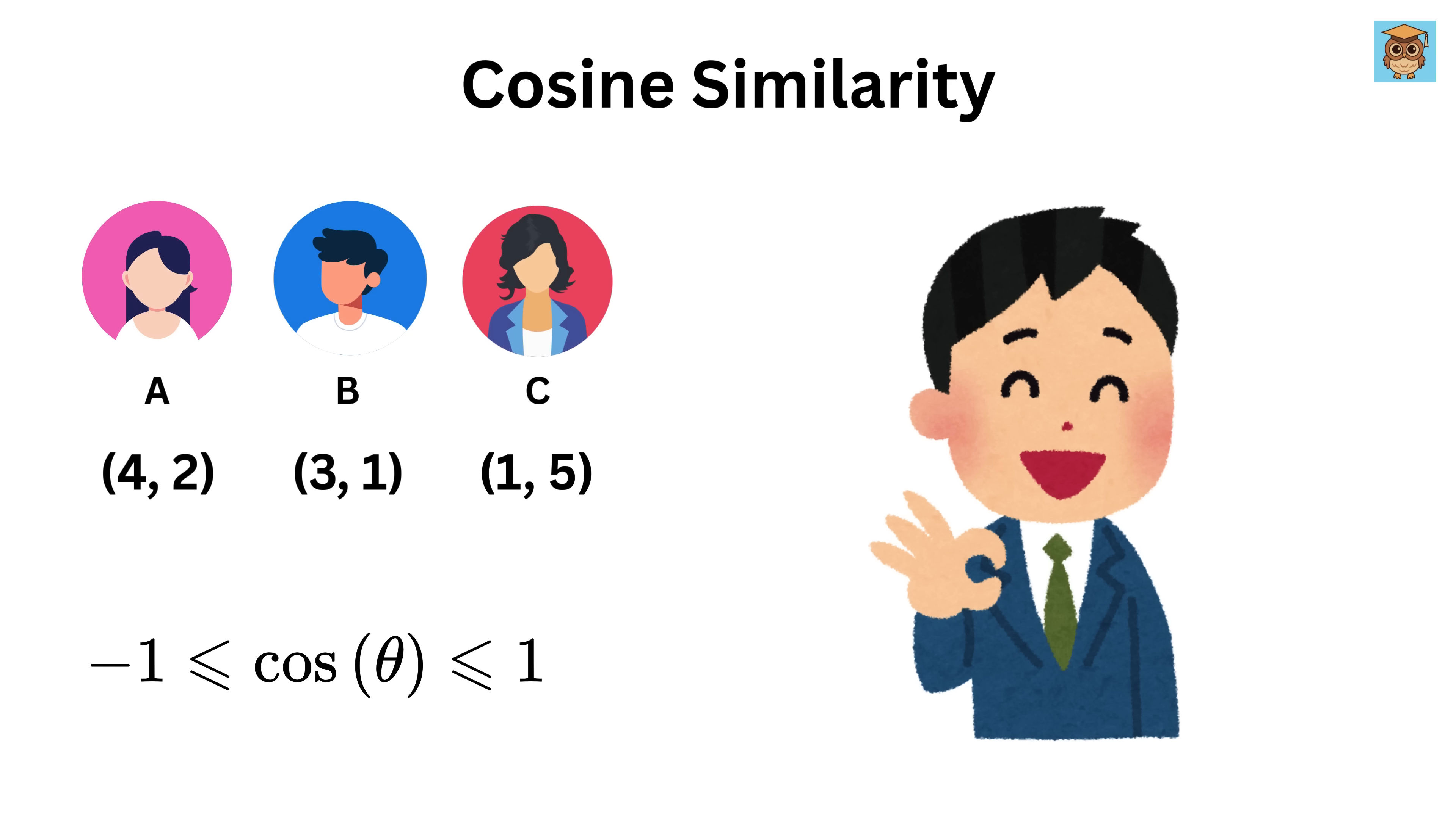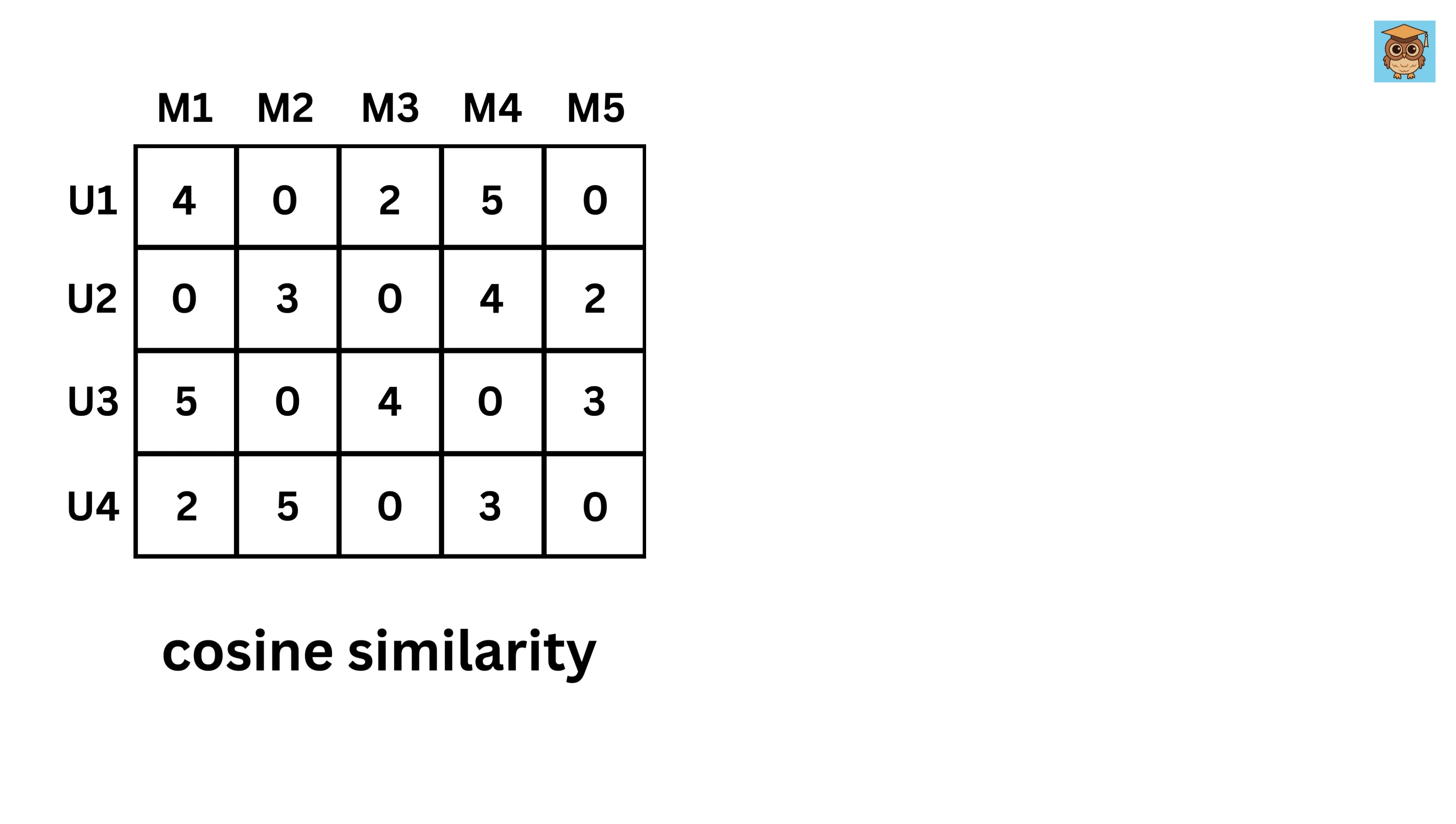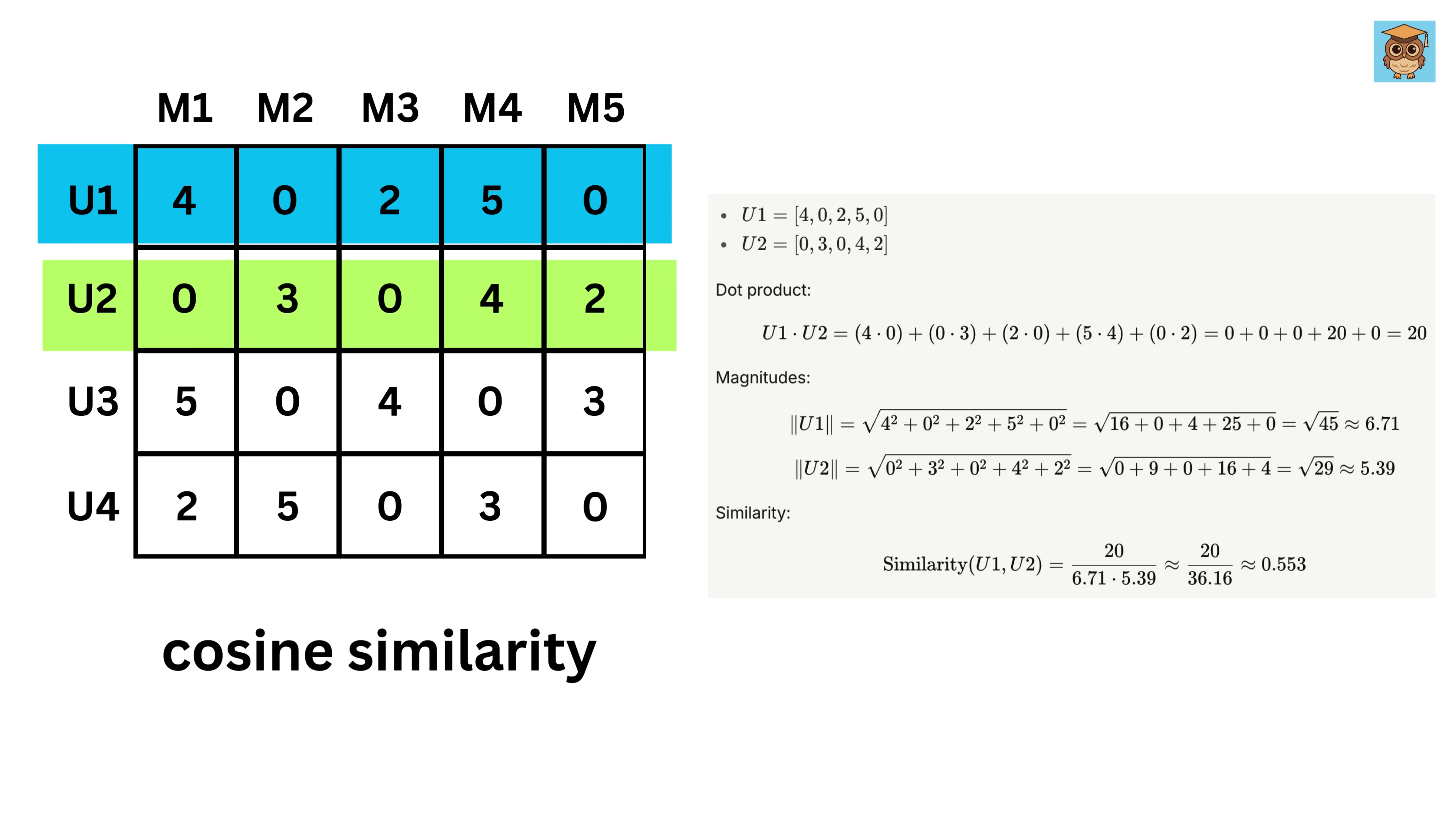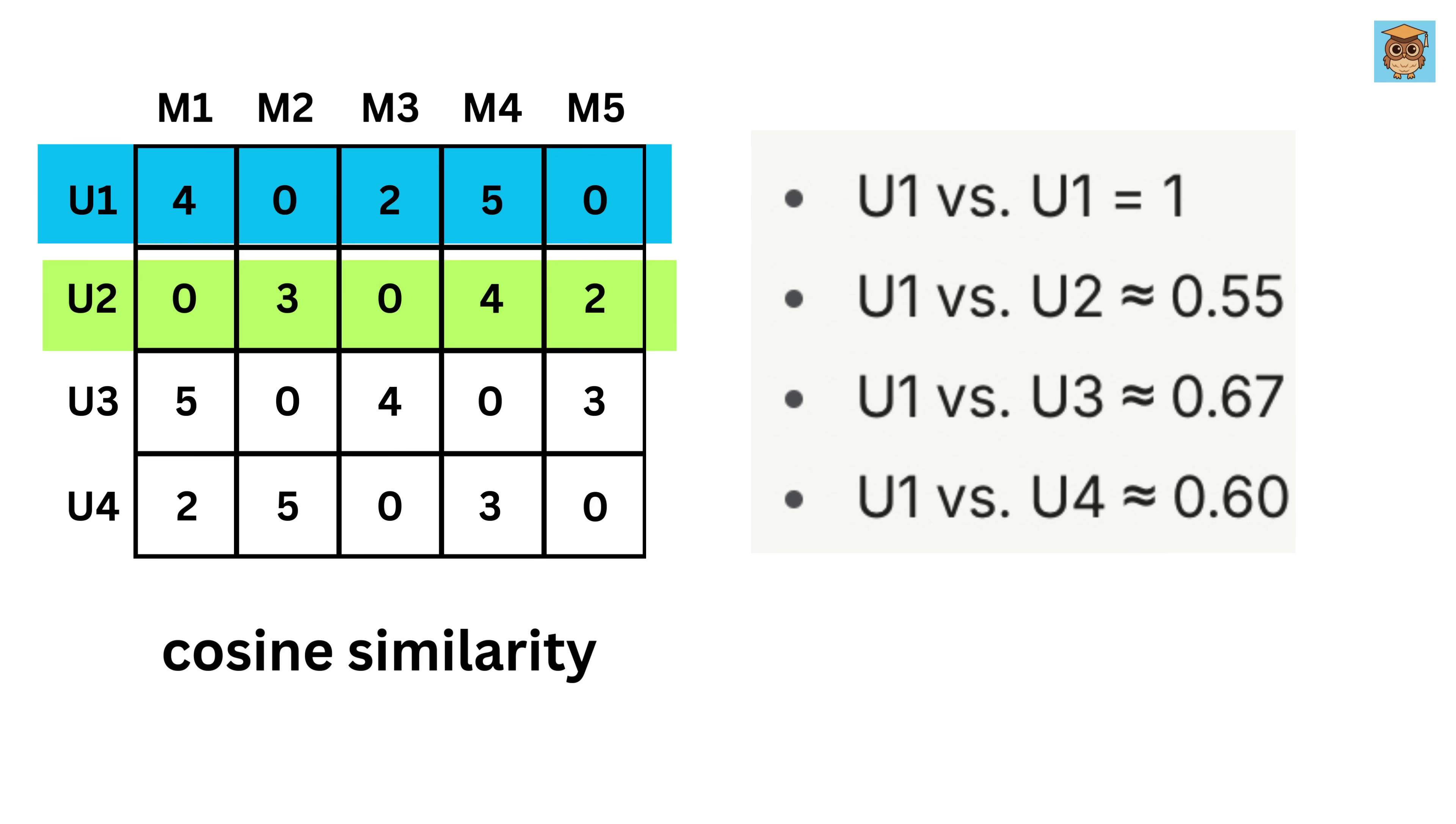Okay, enough of cosine similarity. Let us come back to our original example. We'll calculate a similarity score between user one and the others. Let's start with user one and user two. Now you know what to do. The cosine similarity between both of them will be this, which turns out to be 0.55.